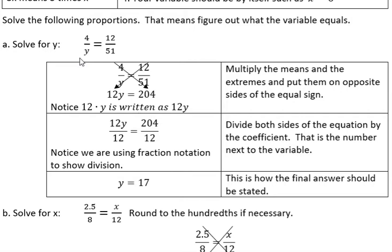So we start off by doing those cross products. 12 times y, which we're just going to write as 12y. We don't write the dot in there. And then 4 times 51, which is 204.